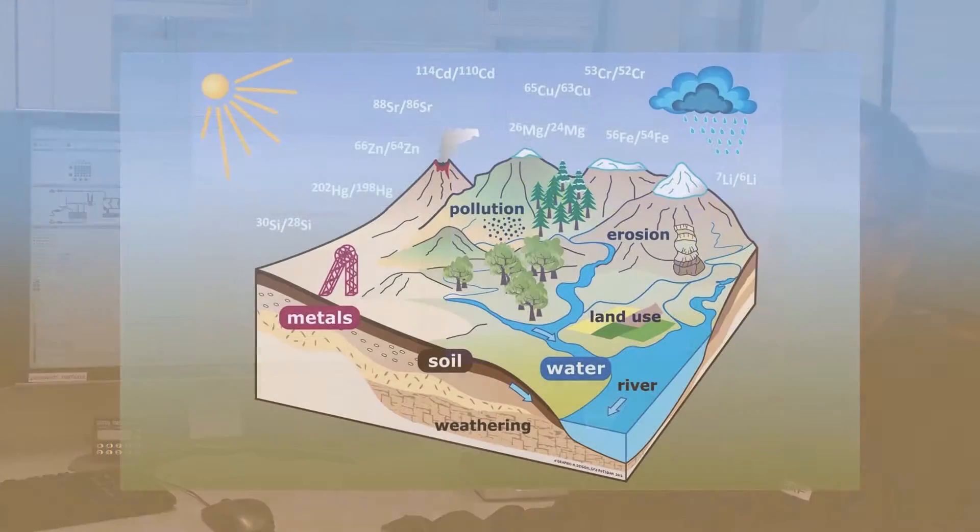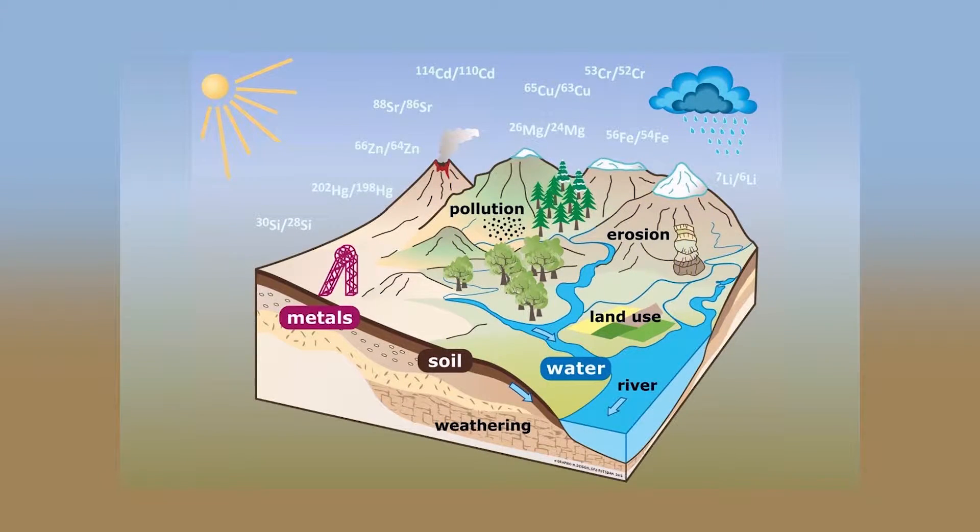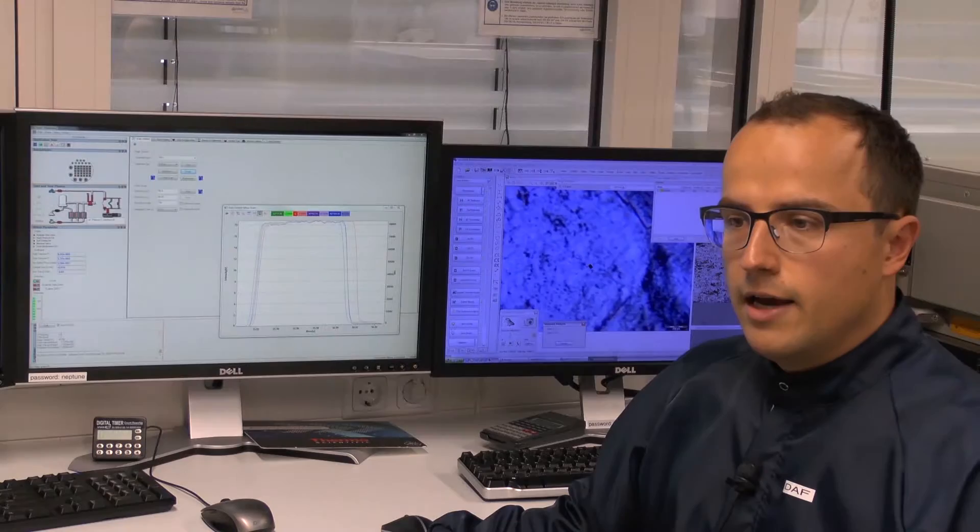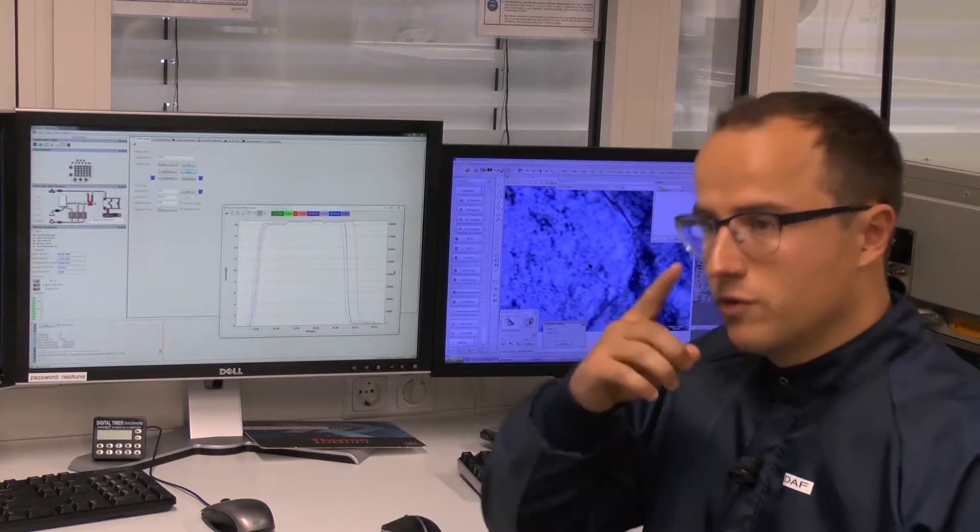We're using stable metal isotopes as novel sensors to trace Earth's surface resources and processes, and hence the name ISONOS originated.